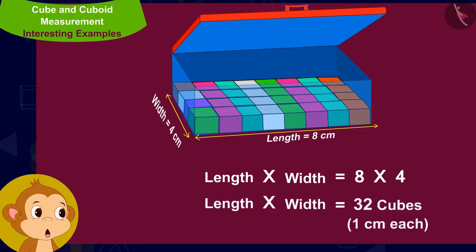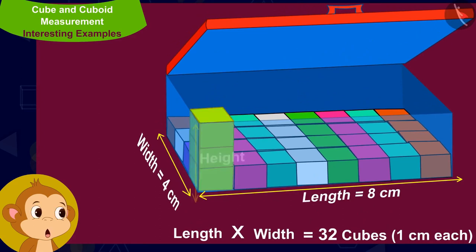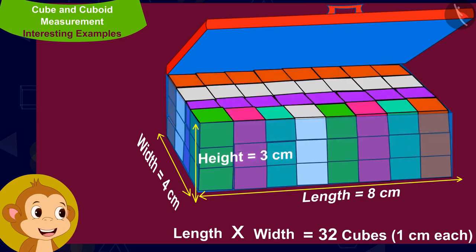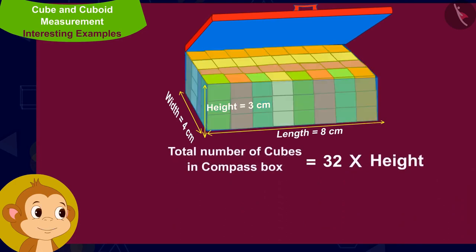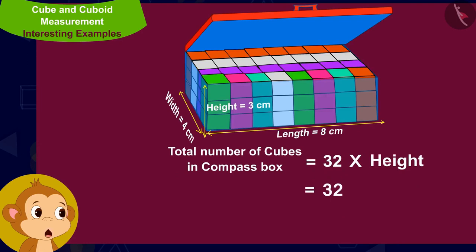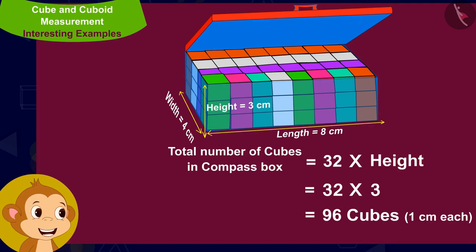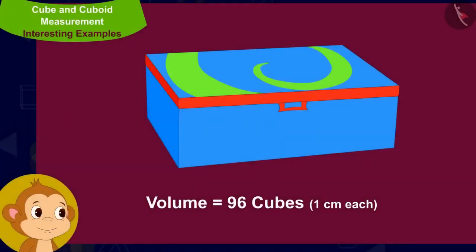That is 32 cubes of 1 cm each per layer. The height of the compass box is 3 cm, meaning there are 3 such layers. So each compass box has 32 times 3, that is 96 cubes of 1 cm each. In other words, the volume of a compass box is equal to 96 cm³.